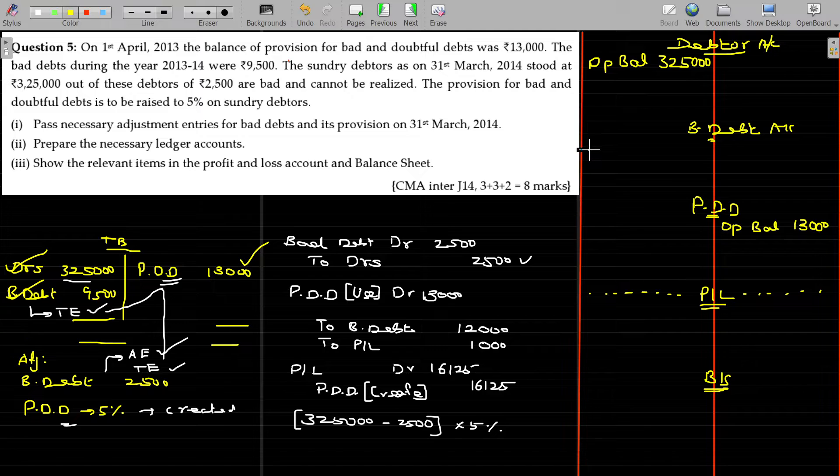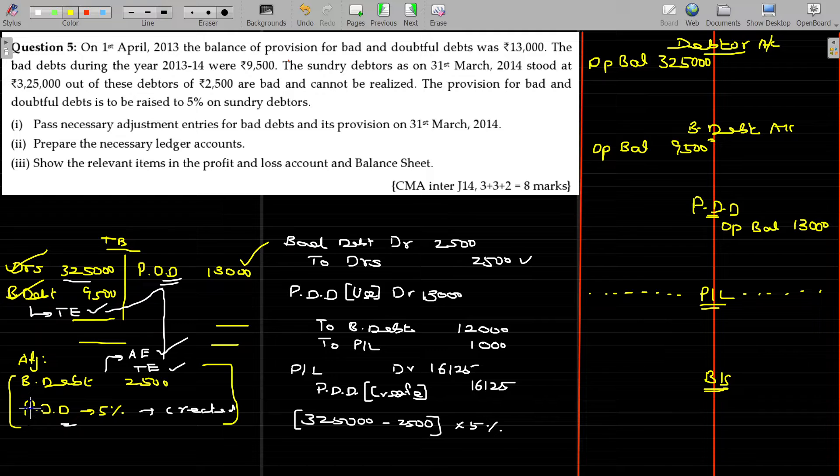Bad debt should be in the bad debt's debit side. Opening balance, 9,500. Because of these adjustments, we have passed the adjustment entry as to the transfer entry. I am going to incorporate that here.